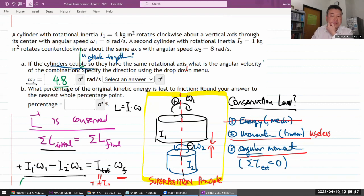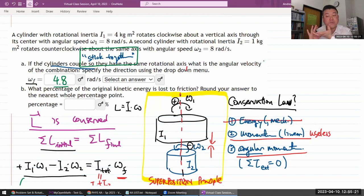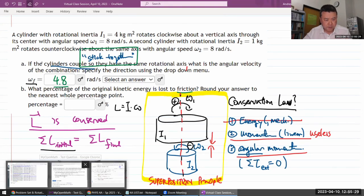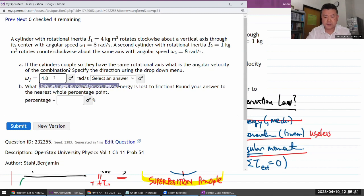And the second part asks what percentage of original kinetic energy is lost to friction. So it's referring to this part. As they stick together, there should be some mechanism for dissipating away energy. And I can imagine that being friction. So let me first double check what the number we calculated is correct. Oh, and in the direction. So because positive is clockwise, we'll say it's clockwise because this is a positive answer.